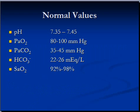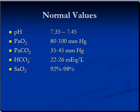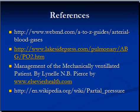The normal values of arterial blood gases are: pH 7.35–7.45; partial pressure of oxygen 80–100 mmHg; partial pressure of carbon dioxide 35–45 mmHg; bicarbonate 22–26 mEq/L; and oxygen saturation 92–98 percent. This lecture is prepared for www.academyofprofessionals.com.